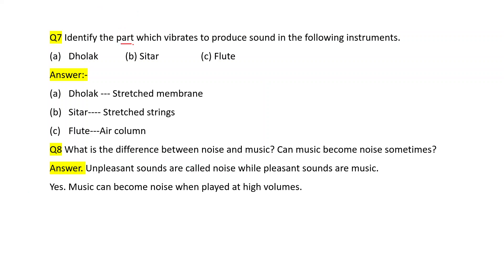Identify the part which vibrates to produce sound in the following instruments. In a dholak, the part is the stretched membrane. In a sitar, it is the stretched strings. In a flute, the flute is hollow and contains air — when this air vibrates, sound is produced — so the answer is air column.